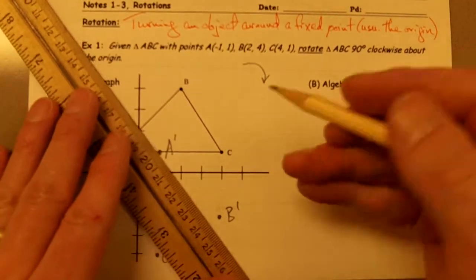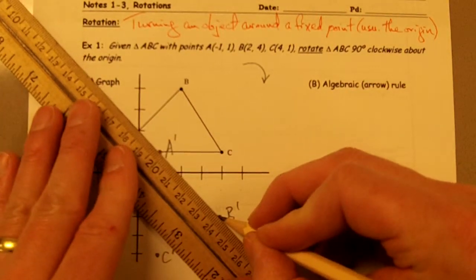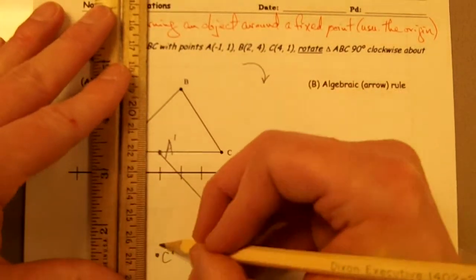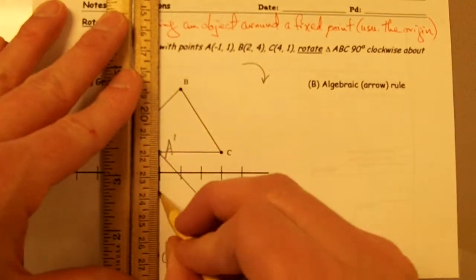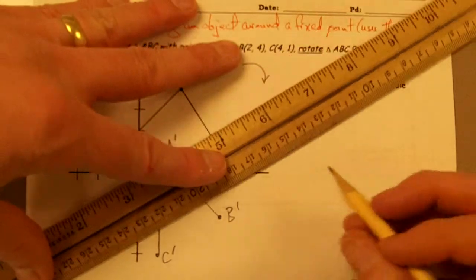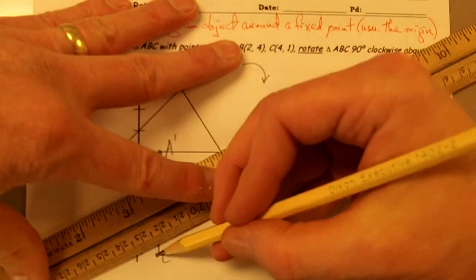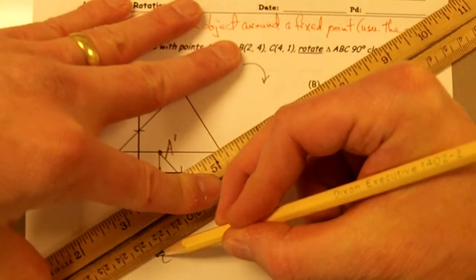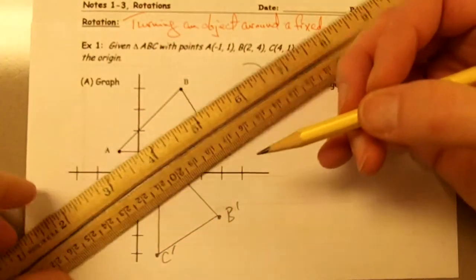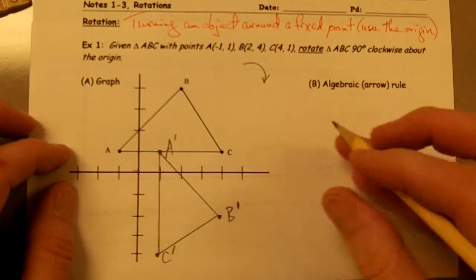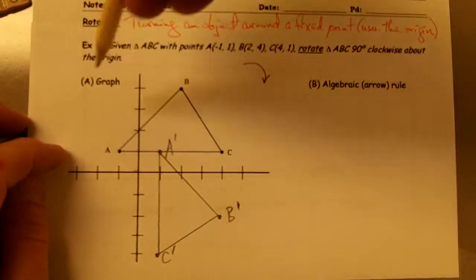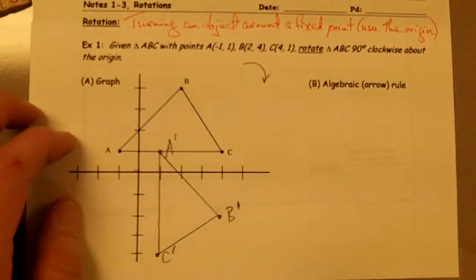Now I take my ruler and connect up these points A prime, B prime, and C prime. And here's my rotated triangle. I just rotated triangle ABC 90 degrees clockwise about the origin.